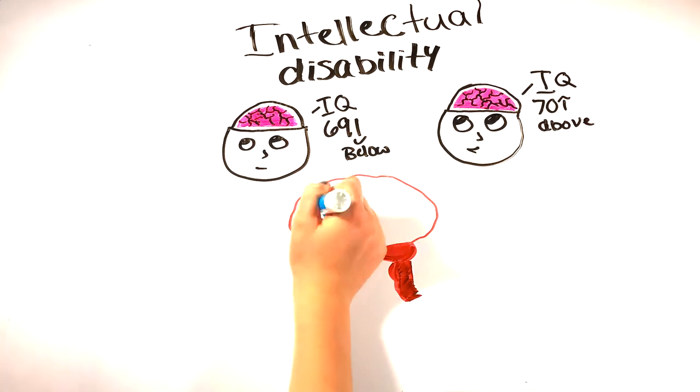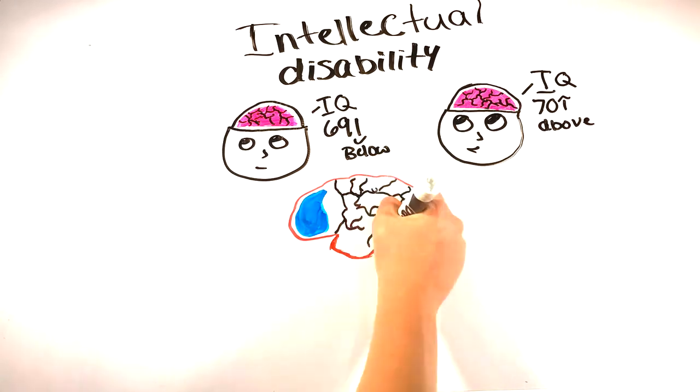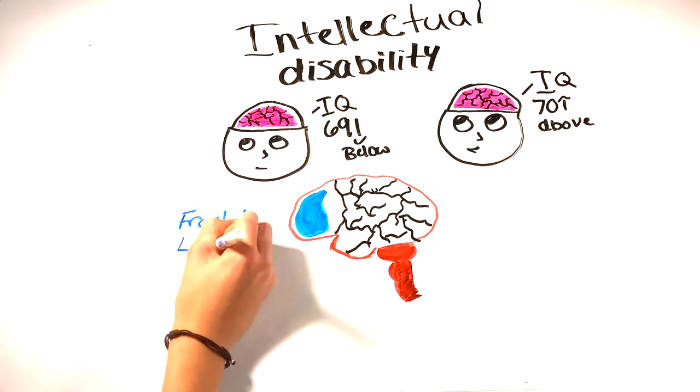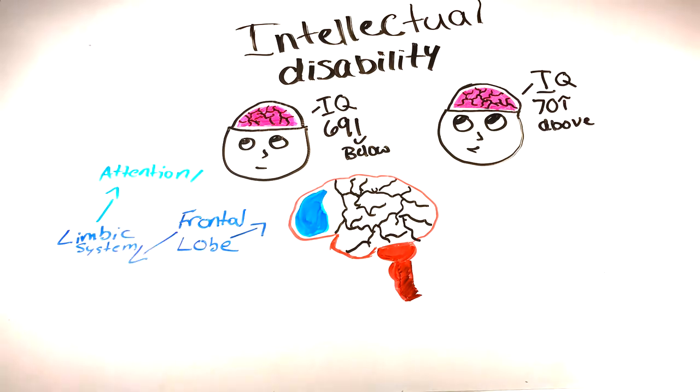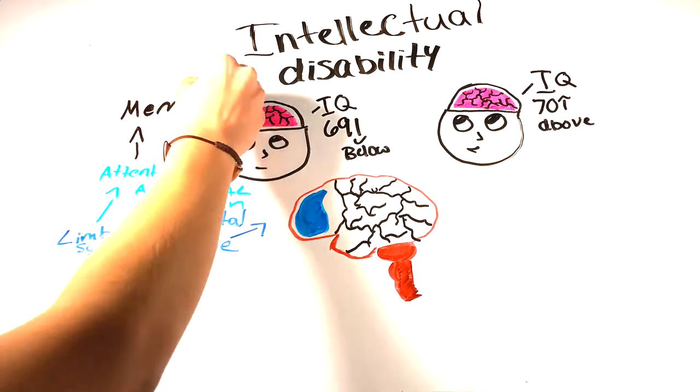People who have intellectual disability also don't have a fully developed executive brain. The executive brain controls the frontal system, which includes the frontal lobe. It is connected to the limbic system, or the emotional brain, the attention and arousal brain, and finally, the processing network for sensory perception.